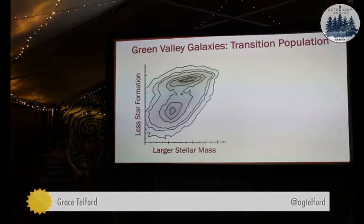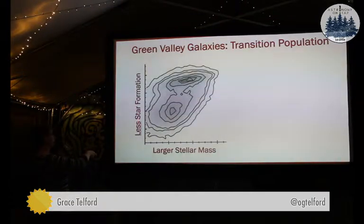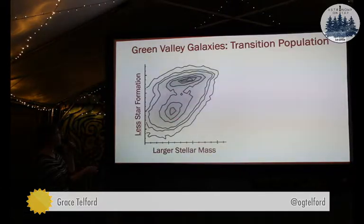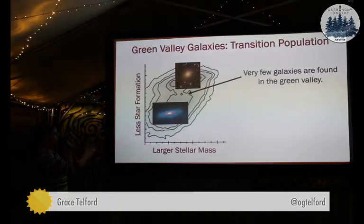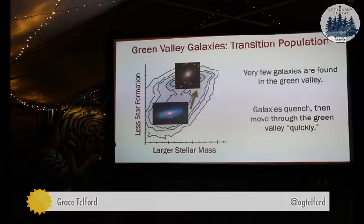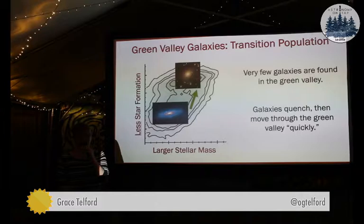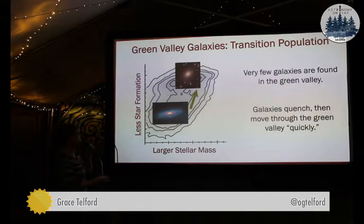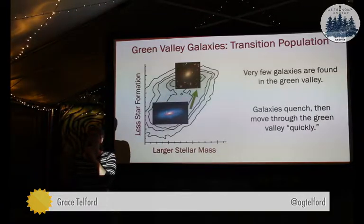Then we have the Green Valley galaxies, which we do think are a transition population. What I'm showing you here is basically that same diagram except with real data, but this time it's flipped — so now things at the bottom are forming a lot of stars and things at the top are not forming stars. This is basically a contour map showing the number of galaxies. There are a lot of galaxies right here and a lot of galaxies right here and not very much in between. We have our red galaxies up here, blue here, and not much in what we call the Green Valley. The idea is that galaxies are hanging out in this star-forming portion of the diagram, but then they quench for some reason and move relatively quickly — a few hundred million years to a gigayear — through the Green Valley and make their way over to the quenched population. That's the explanation for why we don't see a lot of galaxies in that part of the diagram.